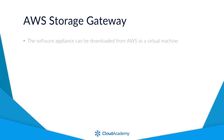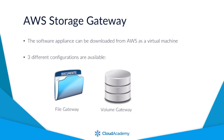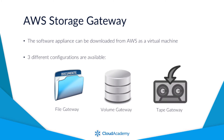The software appliance can be downloaded from AWS as a virtual machine, which can then be installed on your VMware or Microsoft hypervisors. Storage Gateway offers different configurations and options, including file, volume, and tape gateway configurations, which you can use to help with your DR and data backup solutions.